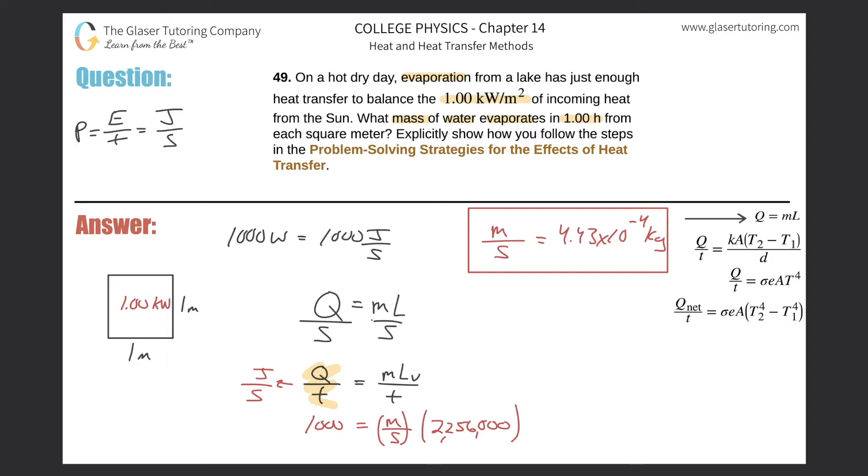Remember what I just found—this is literally the mass evaporating every single second. Now let's connect it to the final answer. What did they want us to find? What mass of water evaporates in one hour? Well, if this is the mass that evaporates every single second, I would simply have to do a conversion.